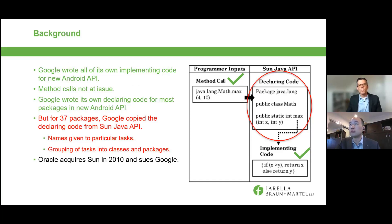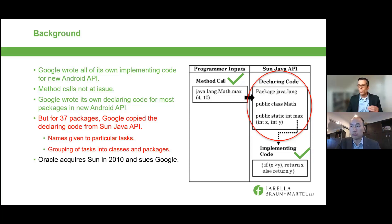The Java Standard Edition platform in 2008 had 166 packages, three of which were considered core packages — you had to use those packages to make any meaningful use of Java. But Google didn't just copy those three packages; it copied 37 packages of declaring code, including the structure, sequence, and organization of that declaring code, which included over 600 classes and over 6,000 methods. Google wrote its own implementing code for all of those methods. Method calls were not at issue — Oracle didn't make a copyright claim on those. What was at issue was this intermediary declaring code.